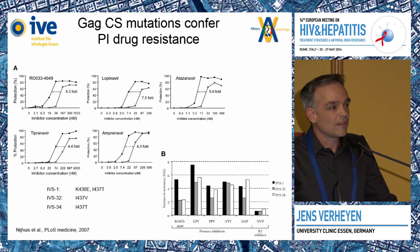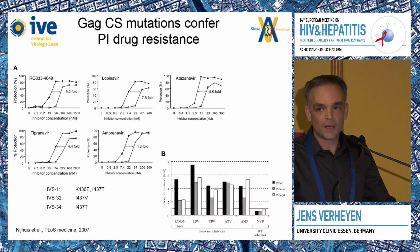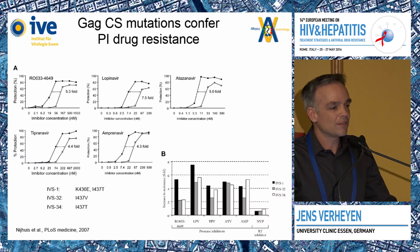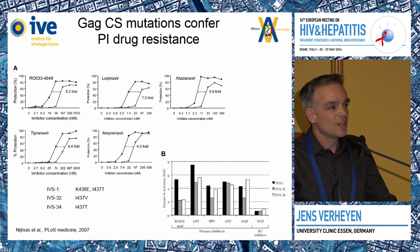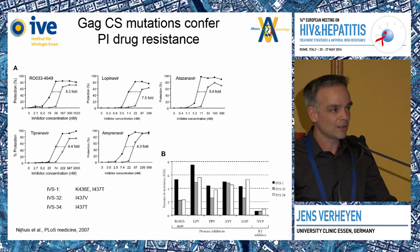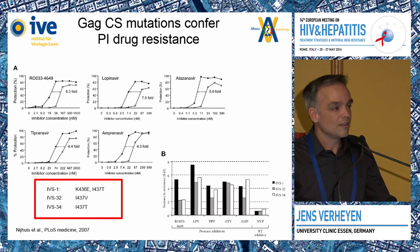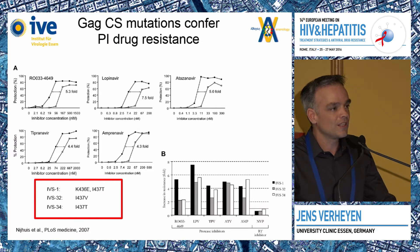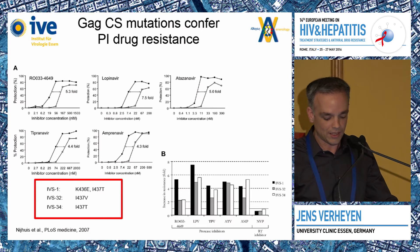There's another publication — a real game changer for GEC mutations in the field — published by Monique Niehus. She showed that in cell culture, you can select for viruses that harbor only GEC mutations. If you give protease inhibitors in suboptimal concentrations, you can select for viruses carrying only GEC mutations. These are the only mutations in the whole virus replicating in cell culture, and you see a two- to eight-fold drug resistance conferred only by these GEC mutations.